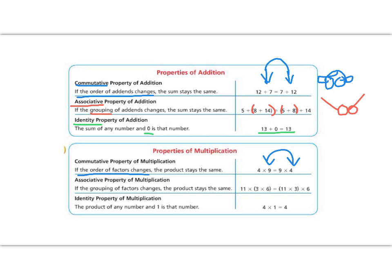The associative property of addition and multiplication is the same thing. It means I can change my grouping symbols without changing my answer. I started off with 11 times (3 times 6). Now I have (11 times 3) times 6. I still see an 11, and then an 11, a 3, and then a 3, and then a 6, and a 6. That all stayed the same, but what changed is where my parentheses were. They started off over here, and then they moved over there.